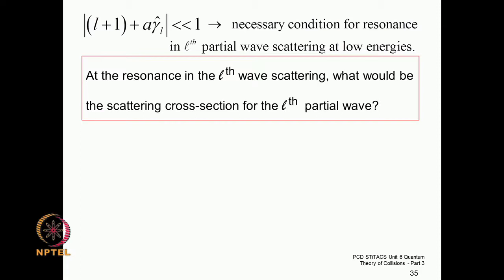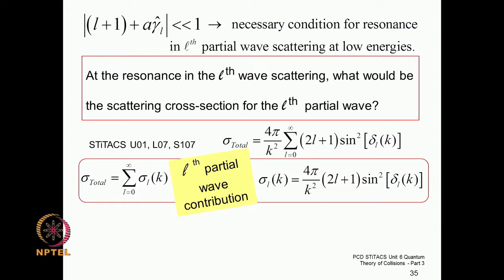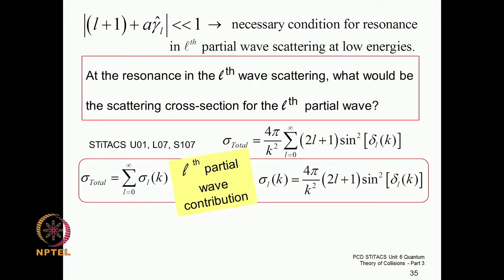We already know that the total cross section can be written as a sum of partial wave cross sections from different orbital angular momentum quantum numbers. You sum over all values of l from zero through infinity, and the l-th partial wave contribution is 4π over k² times (2l+1) times sine squared of the phase shift for that partial wave. This hits a maximum when sine squared equals 1.